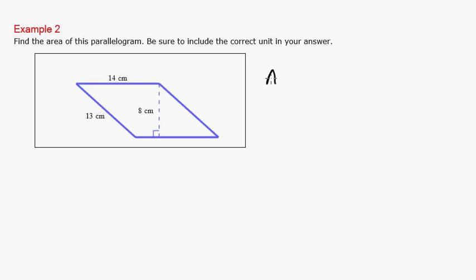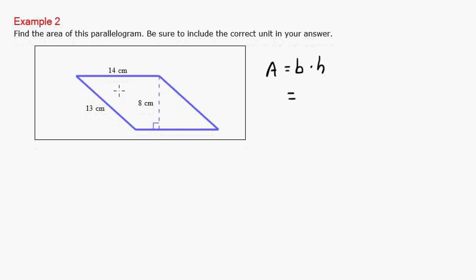So we know that the area is equal to the base times the height. The base is 14, because if it's 14 at the top, it's 14 down here. So we could say 14 times the height of 8. So we can kind of do that ourselves. 8 times 4 is 32, 8 times 1 is 8, plus 3 is 11. So I get 112 centimeters squared, because this is 14 centimeters times 8 centimeters.